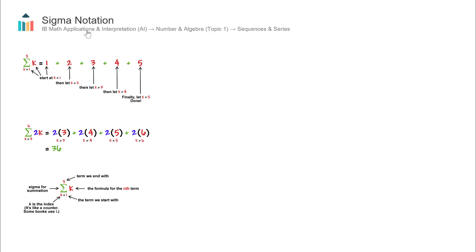This video covers Sigma Notation, a concept found in IB Math's AI in Topic 1, Number and Algebra, which is grouped under the subtopic of Sequences and Series.